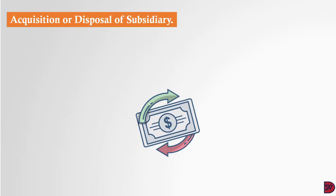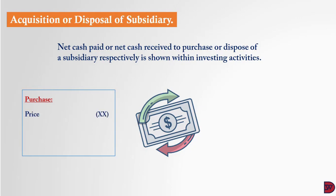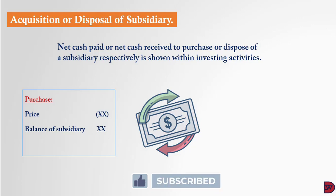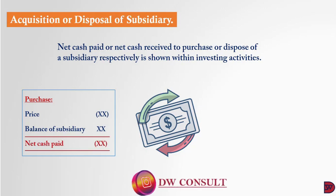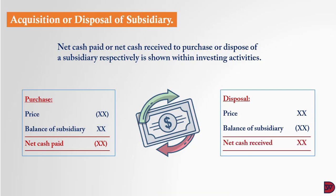When a parent purchases a subsidiary, it is the net cash paid out that is recorded; when it sells a subsidiary, it is the net cash received — not the gross amount. Both are recorded in the investing section of the group statement of cash flows. On acquisition, the price paid less the cash and cash equivalents held by the subsidiary gives the net cash paid. On disposal, the amount received less the cash and cash equivalents in the subsidiary gives the actual cash gained.